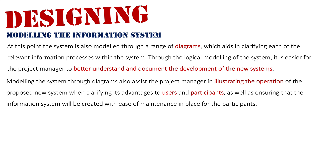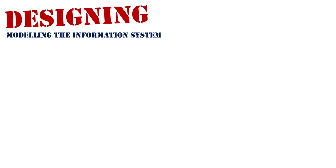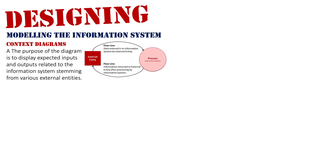We're going to look at six ways of modeling the system covered in the project management and developing information systems units. These are: context diagrams, data flow diagrams, data dictionaries, decision tables, decision trees, and storyboards. The first is a context diagram, which displays all expected inputs and outputs into the information system from various external entities. There is only ever one circle representing the entire system, but multiple squares representing different external entities or users.